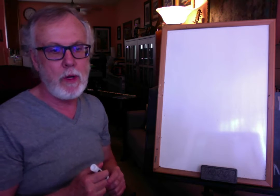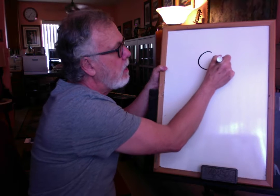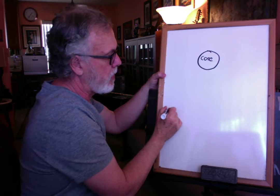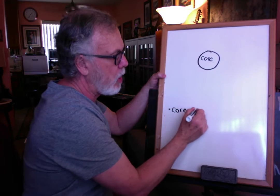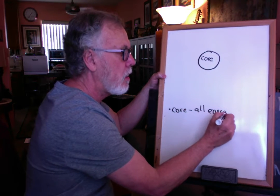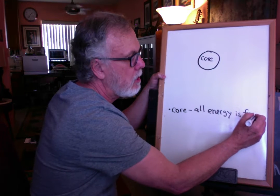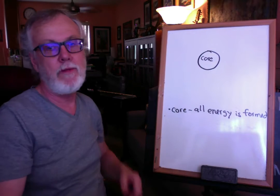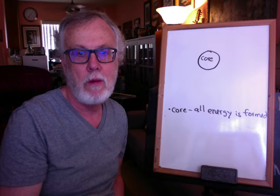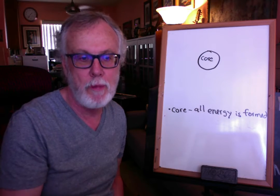Right in the interior of our star, called the core, is where all the energy of the Sun is formed. In a different video, we have listed how that energy is formed through something called the proton-proton chain.